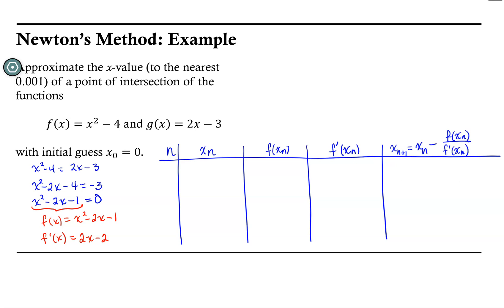Now we were told to start with an initial guess of 0. So f(xₙ) is 0² - 2(0) - 1, which gives us -1. And then f'(xₙ) would be 2(0) - 2, so that would be -2.